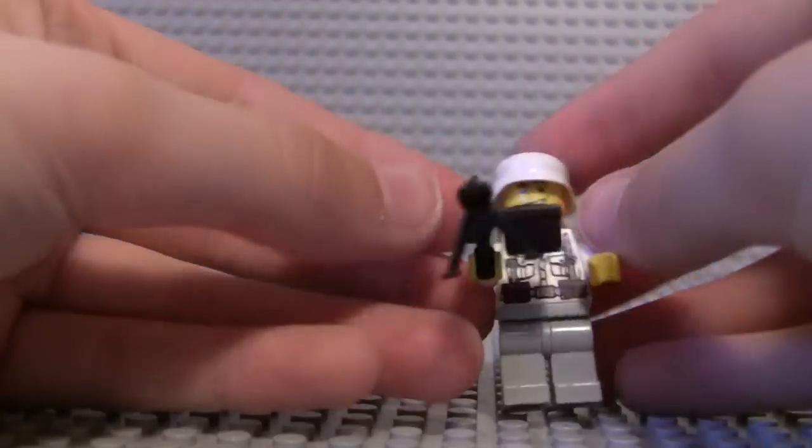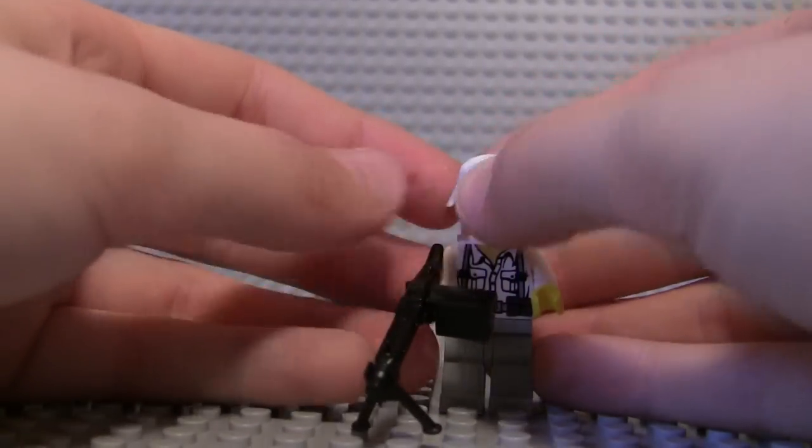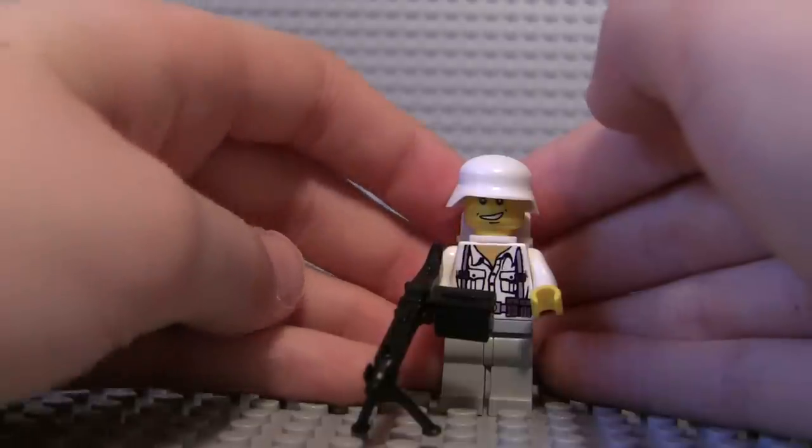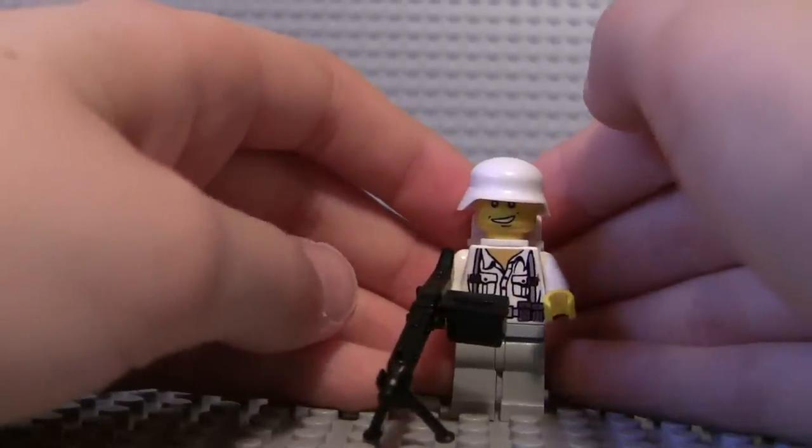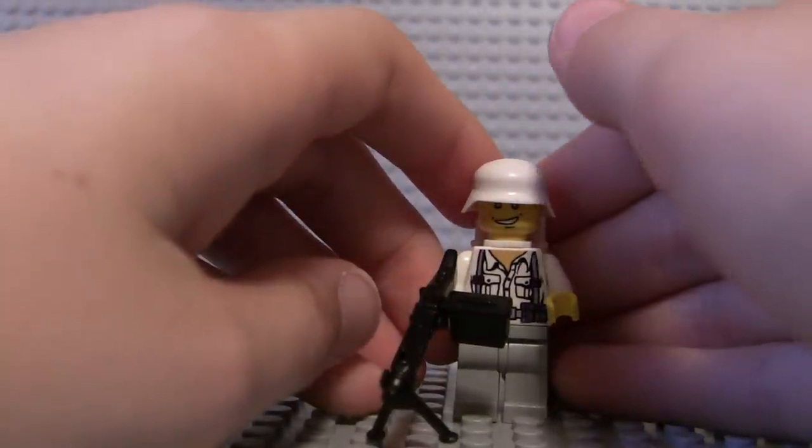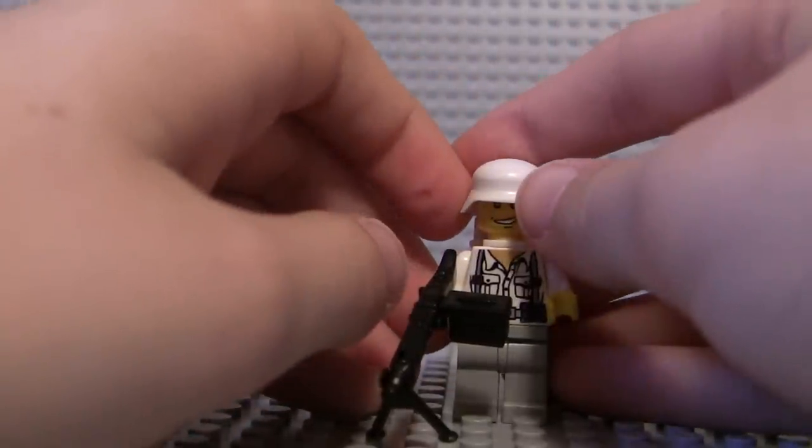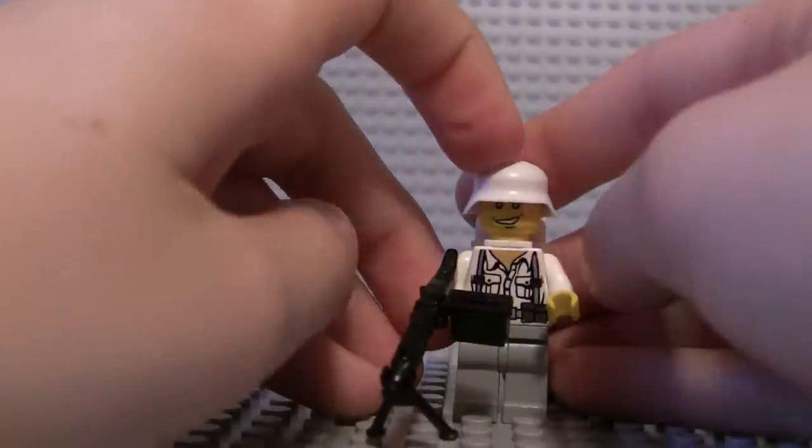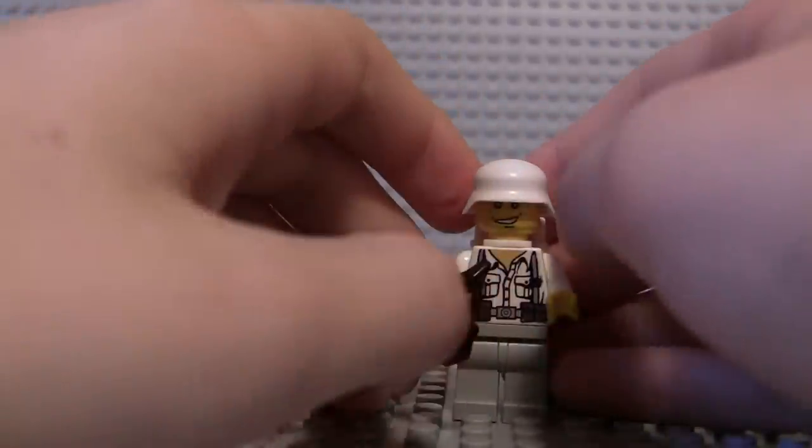Put that on. So there we have it, we have our own custom German in snow uniform. This is a really easy technique - just sit down, go through your parts, do trial and error, see what you like and figure out what you like. I think this turned out pretty good.